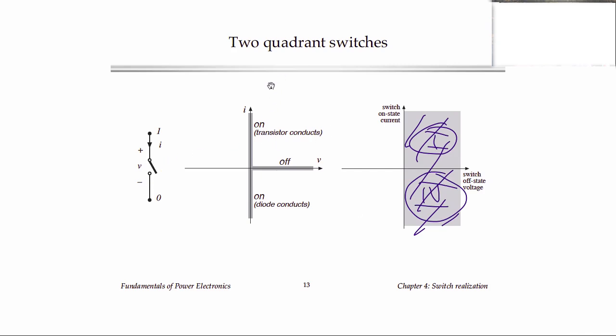And of course also, if we want to build a current bidirectional switch that operates in only the second and third quadrants, all we have to do is connect our transistor and diode up backwards, just define things going in the opposite direction, and we'll get the second and third quadrant.